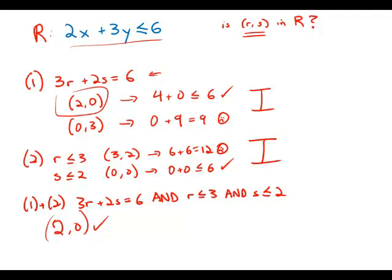But suppose, let's see. S can be up to 2. So let's make s a maximum. Let's make s 2. And then in order to equal 6, 2 times 2 is 4. So 3r would have to equal 2. So that means r would have to be 2 thirds. And so the point 2 thirds comma 2 satisfies this equation, satisfies both of these inequalities. R is less than 3 and s is less than 2.